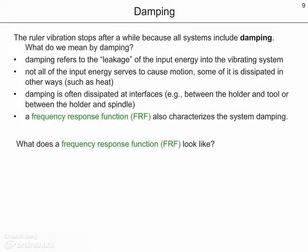We know that after some time, the ruler will stop vibrating. This is because all physical systems include some damping. Damping refers to the leakage of the input energy into the vibrating system. In other words, not all of the input energy serves to cause motion — some of it is dissipated in other ways, particularly as heat. Damping is often dissipated at interfaces, for example, between the holder and tool or between the holder and spindle. A frequency response function also characterizes the system damping.